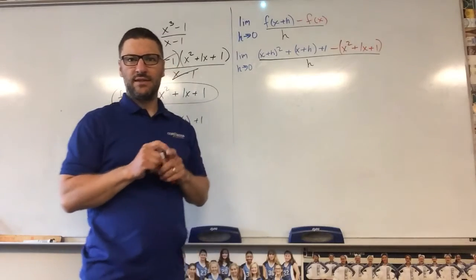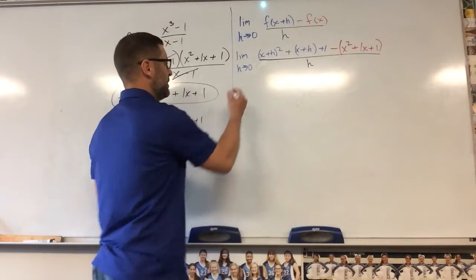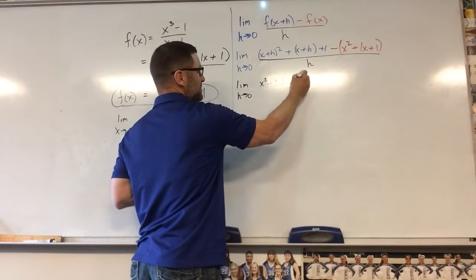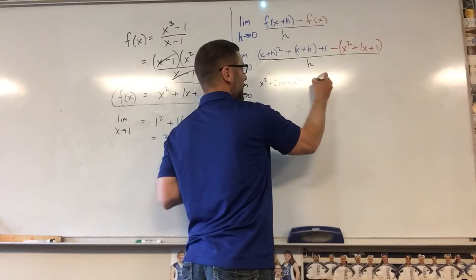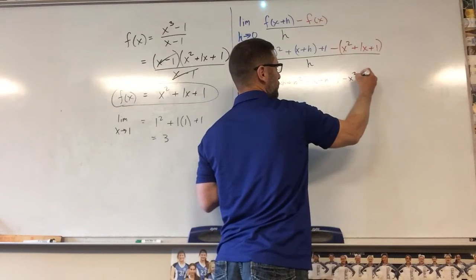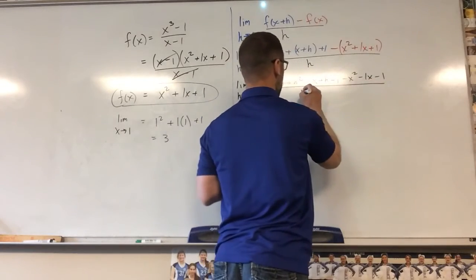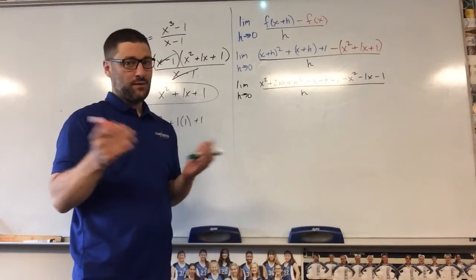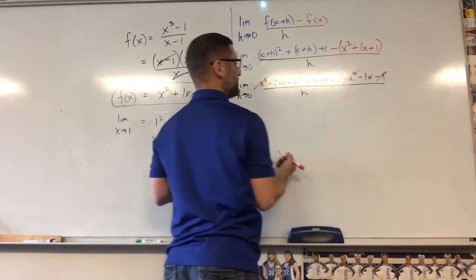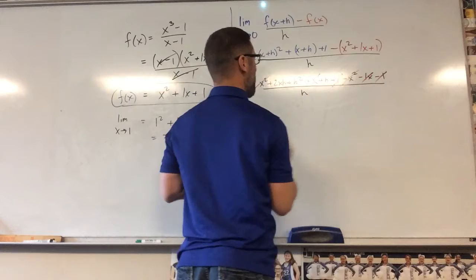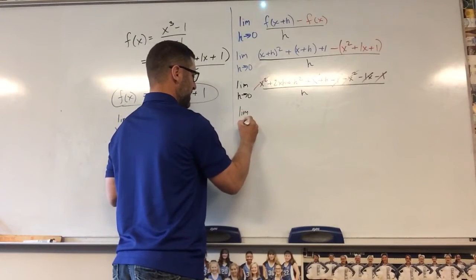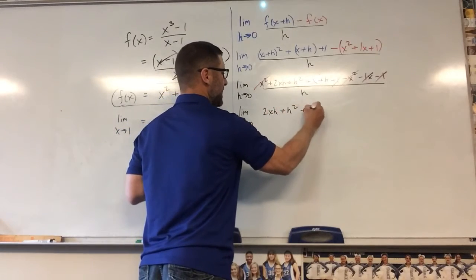Now I should be able to do a bunch of algebra, whack a bunch of stuff out, and find the limit. I'm going to foil (x + h)²: that gives x² + 2xh + h². Then plus x + h, plus one, minus x² minus x minus one, all over h. The x squareds cancel, the ones cancel, the x's cancel. So we get the limit as h goes to zero of 2xh + h² + h, all over h.